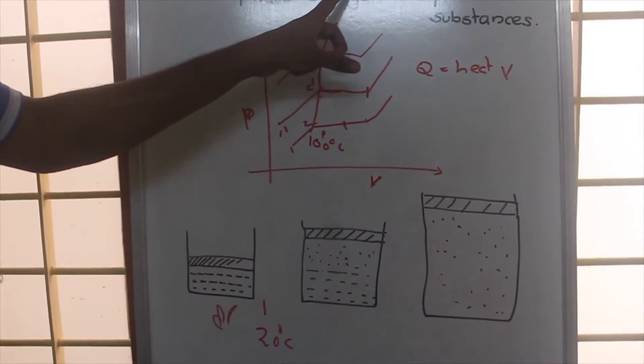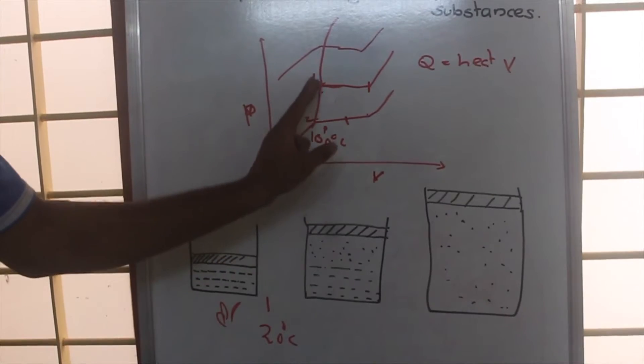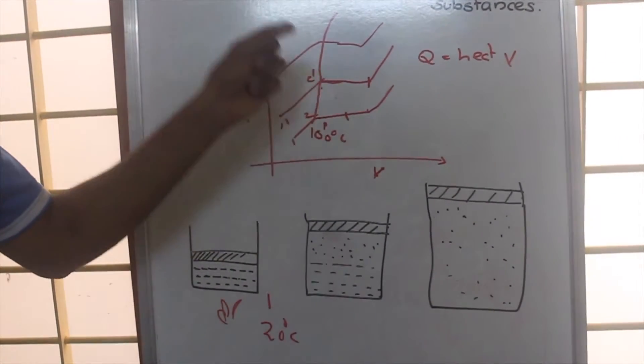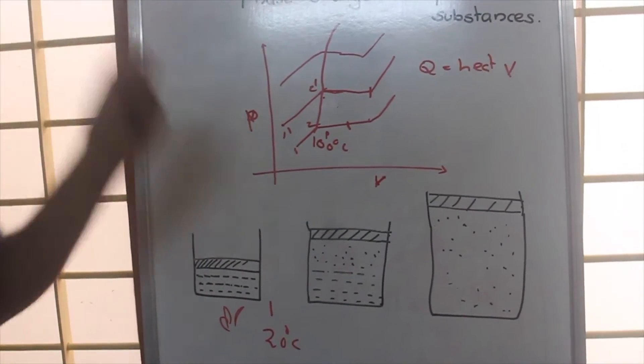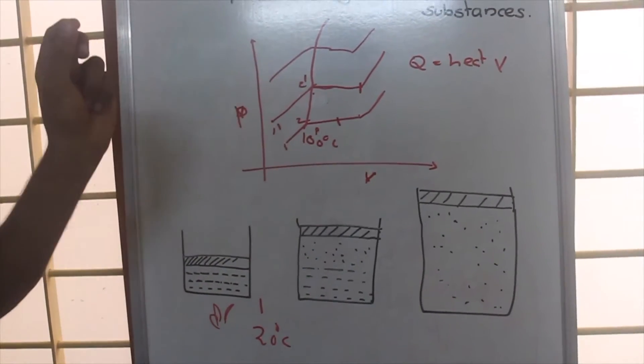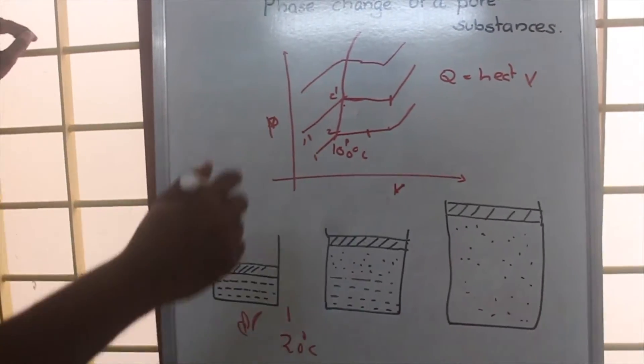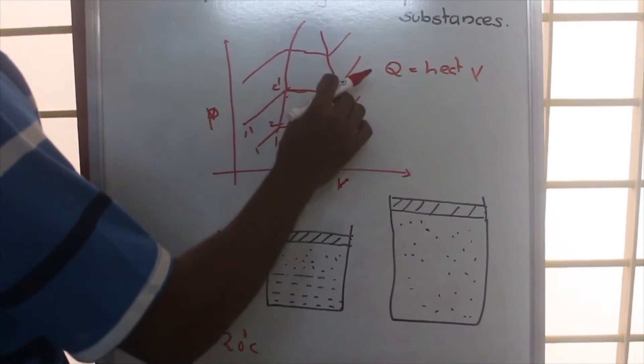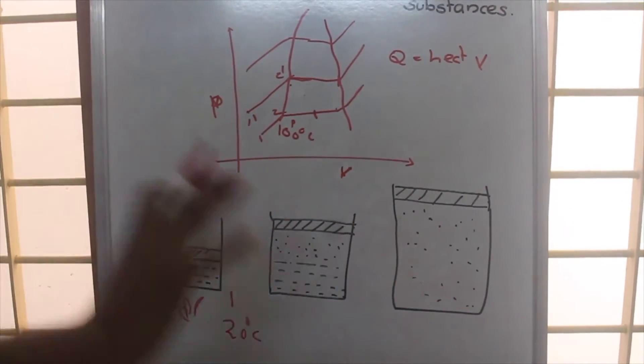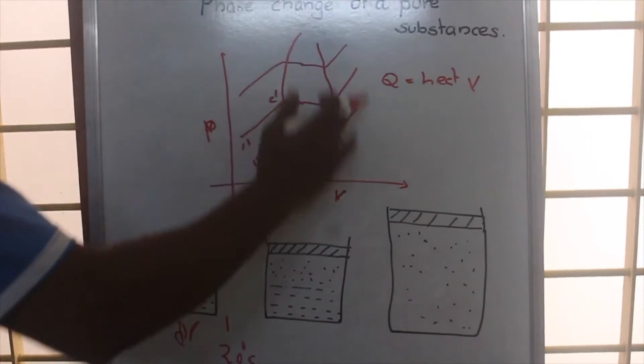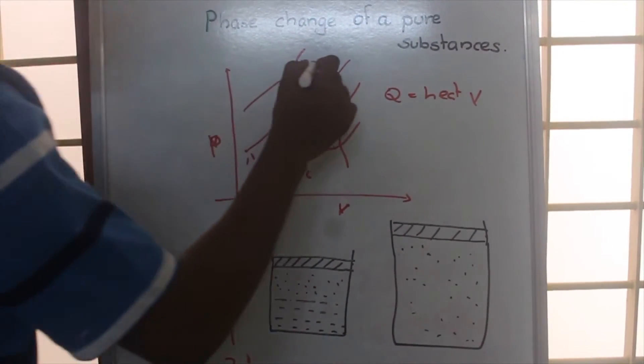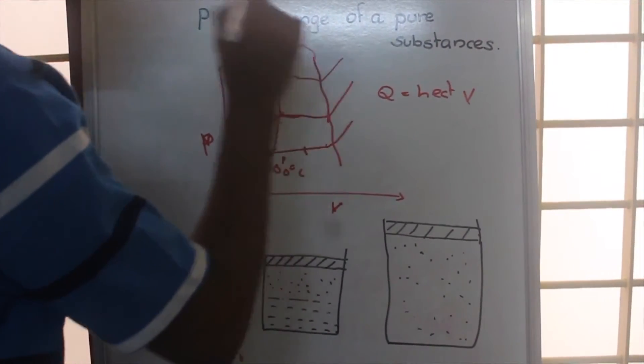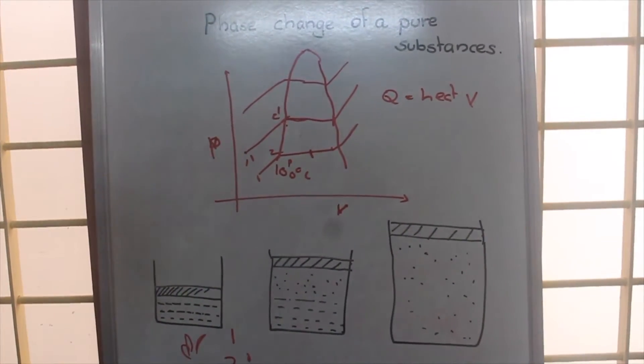This is the liquid saturation point. After this particular point, there will not be existence of liquid only; both liquid and vapor will exist. If we are joining these points, after this point there will be only vapor. This is the vapor saturation line, and these two lines meet at a point that we call the critical point.